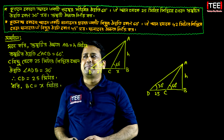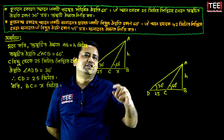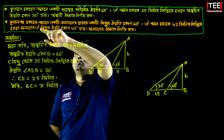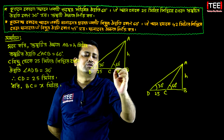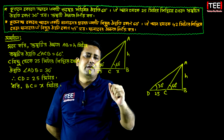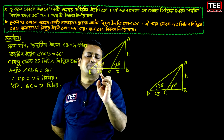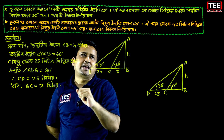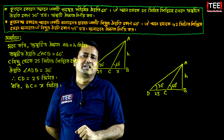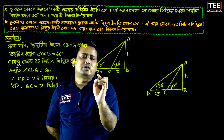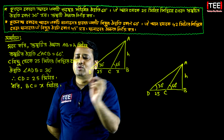Here we are going to say that AB is equal to A meters. This is angle ACB equal to 60 degrees. This is angle ADB equal to 30 degrees. CD is equal to 25 meters and BC is equal to X meters.